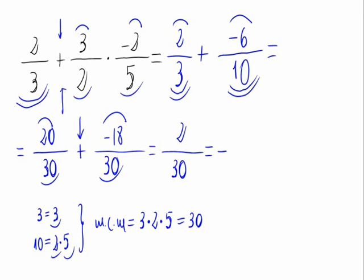This is the result, but we can simplify it. Let's divide everything by 2 and we have 1 divided by 15. This is an irreducible fraction and it is the result of the operation we were asked to solve.